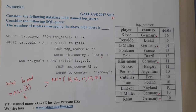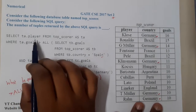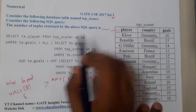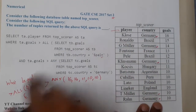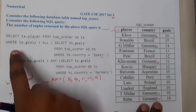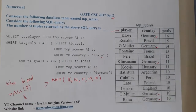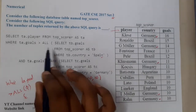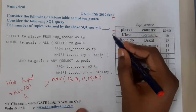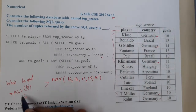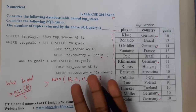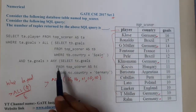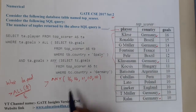At the end, what we are printing is SELECT ta.player from the outer query, named as ta, WHERE ta.goal satisfies both conditions. For greater than ALL of an empty set, every row passes because greater than nothing means everyone qualifies. Now we compare with greater than ANY of the Germany goals: {16, 14, 11, 10, 10}.